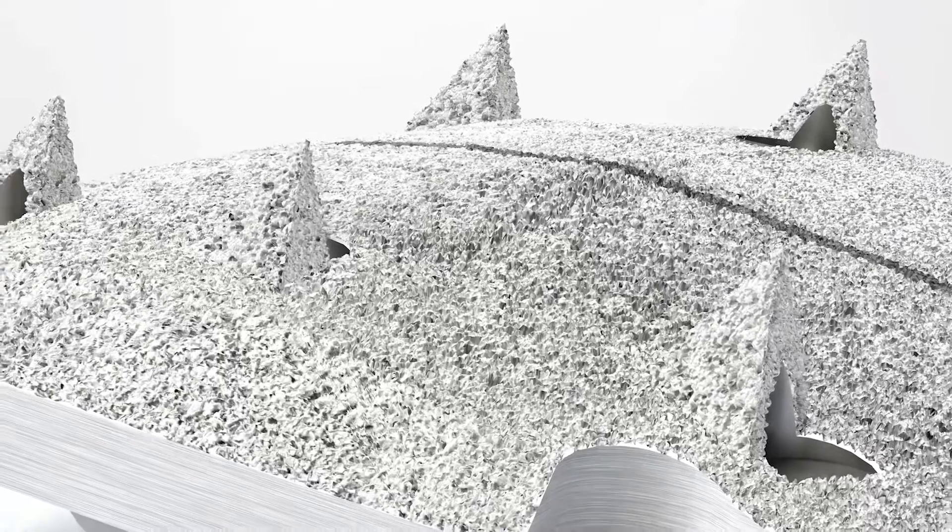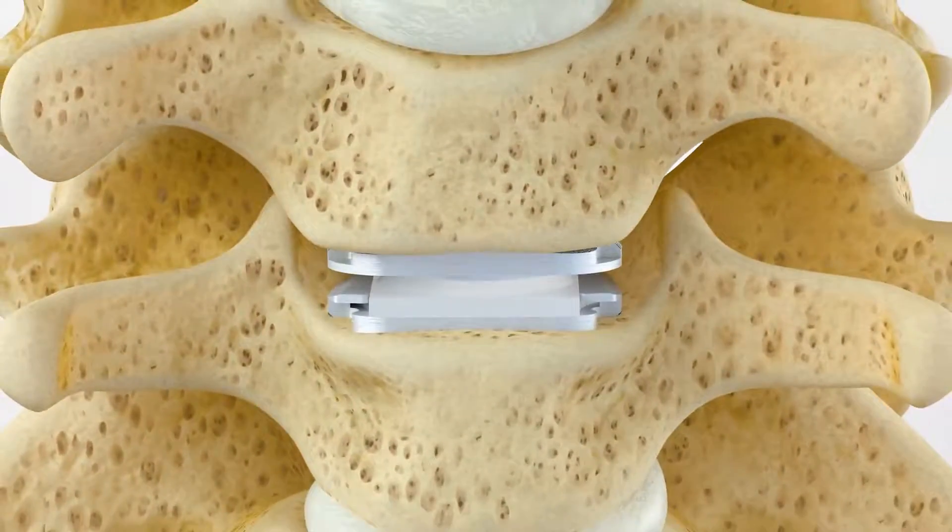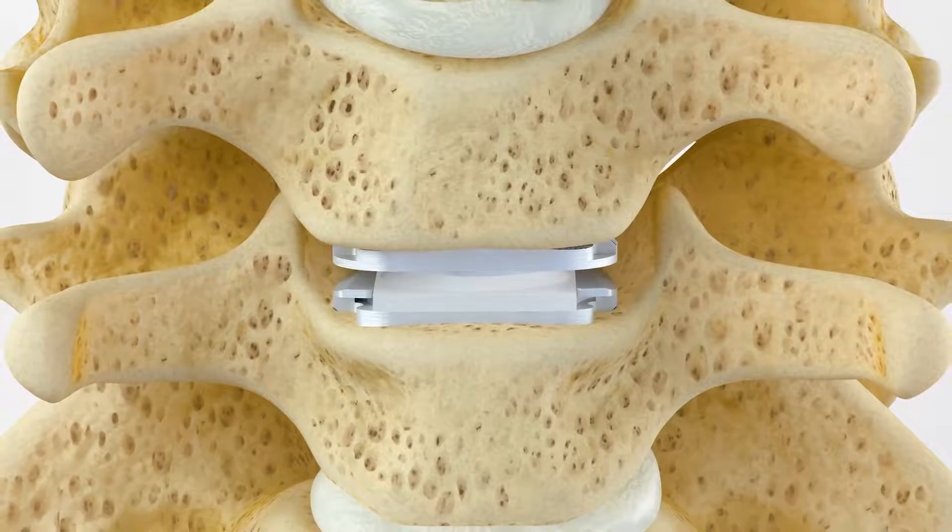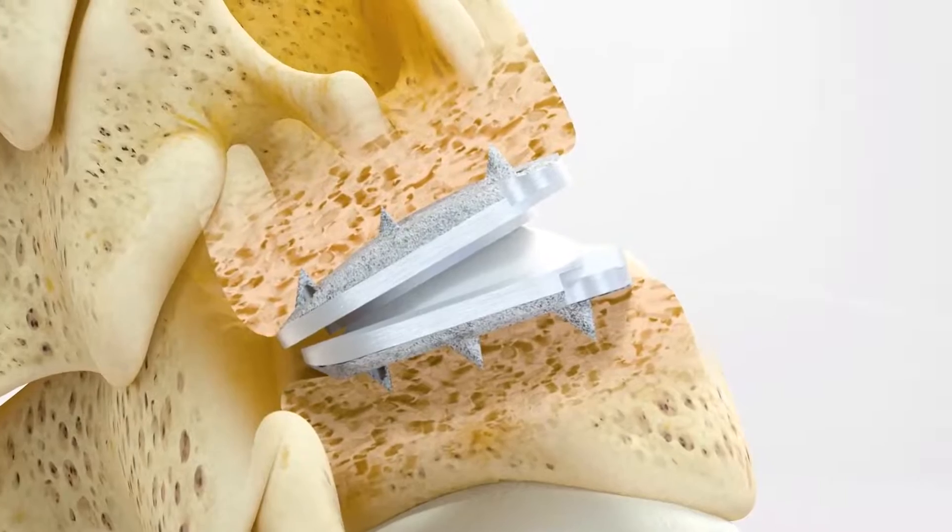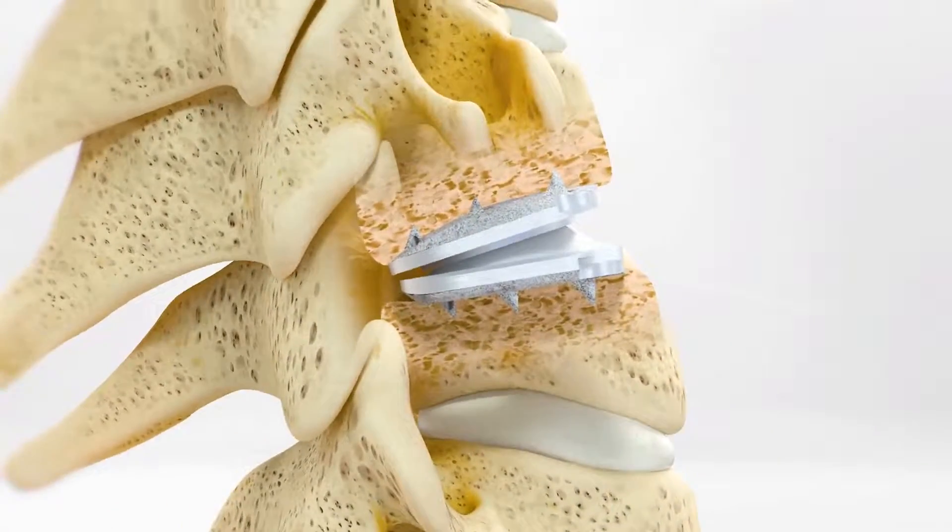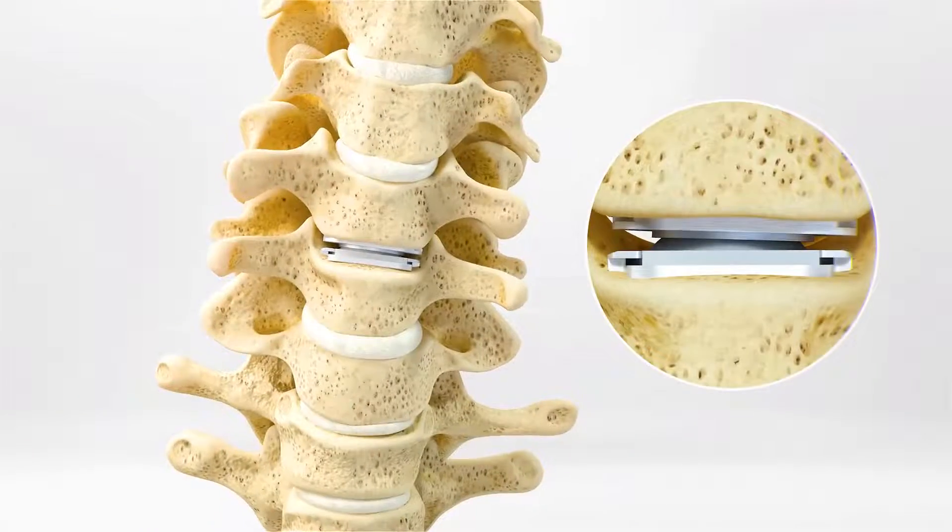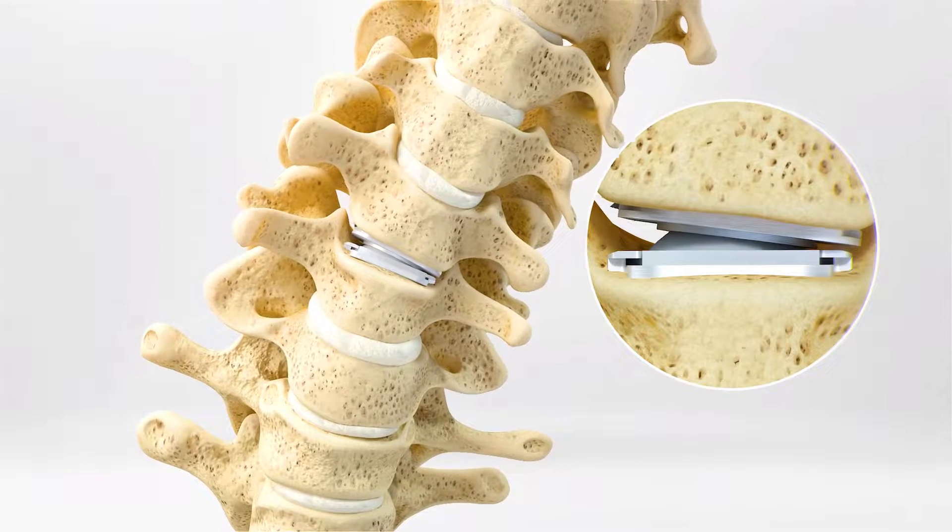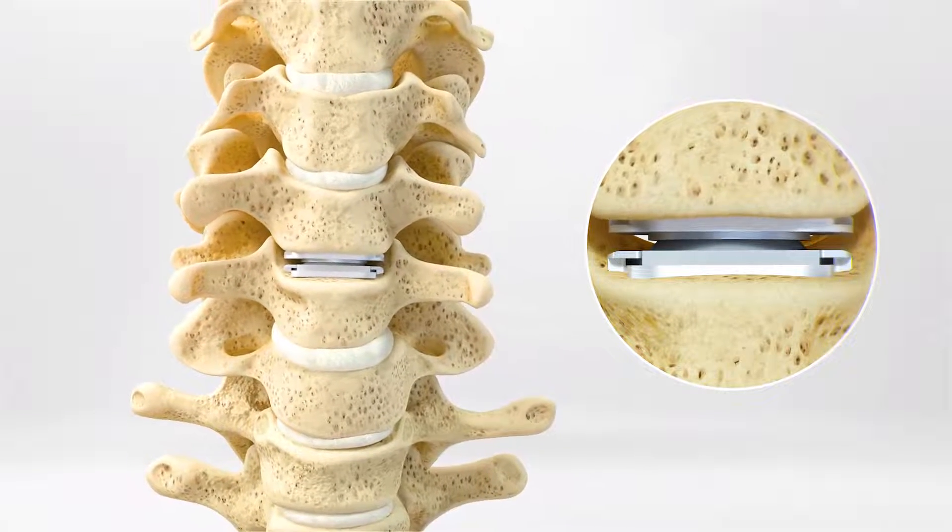The ProDiscC Vivo Implant is secured to the vertebral bodies above and below the disc space with a convex superior end plate and six spikes on the superior and inferior end plates. The implant components work together with surrounding spinal structures to provide stability and function. The ProDiscC Vivo is a zero-profile implant that does not contact soft tissue structures after implantation.